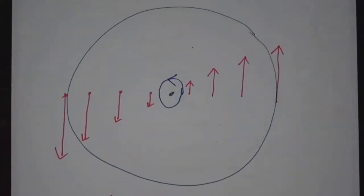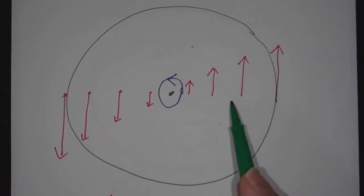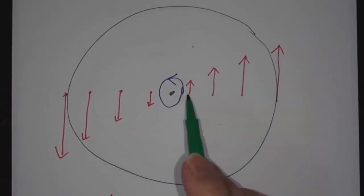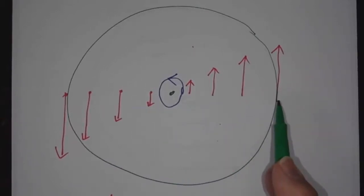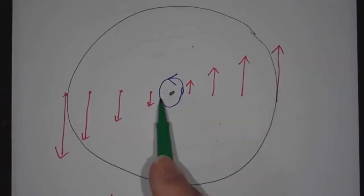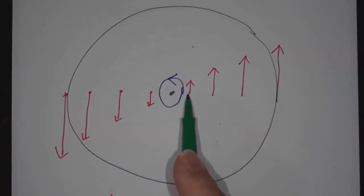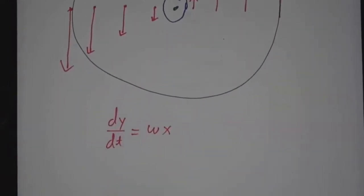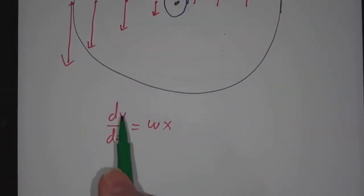So suppose we have a wheel that's rotating counterclockwise. Then the points to the right of the center are going up. The points to the left of the center are going down. And the farther you are to the right, the faster you're going up. This point is going up very quickly. This point is only going up very slowly. This is going down slowly. This is going down quickly. So the upshot is that dy/dt, how fast you're going up or down, is a constant times x. And this constant is the Greek letter omega. It's not a w. It's an omega.